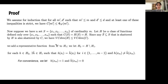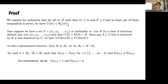For the induction step, we assume that for all m', d' such that m' ≤ m and d' ≤ d with at least one strict inequality, we have C[m'] ≤ Φ(d', m'). We will use this hypothesis to show the result holds for all m and d.